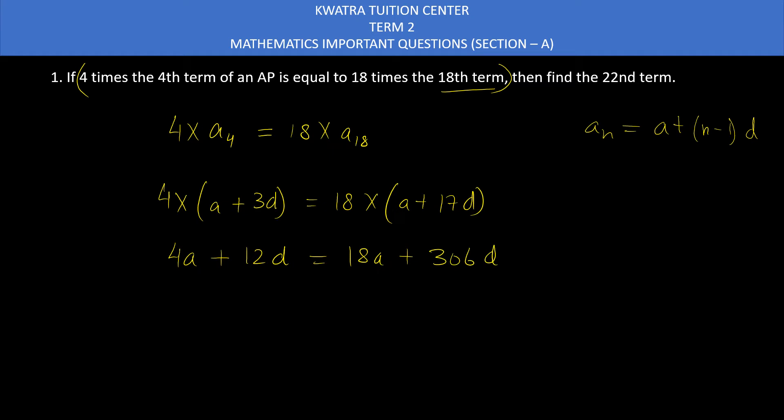Now you can take the A terms to the left side and D terms to the right side. So it will be 4A minus 18A, then you have 306D minus 12D. 4A minus 18A gives minus 14A, and 306 minus 12 gives 294D.